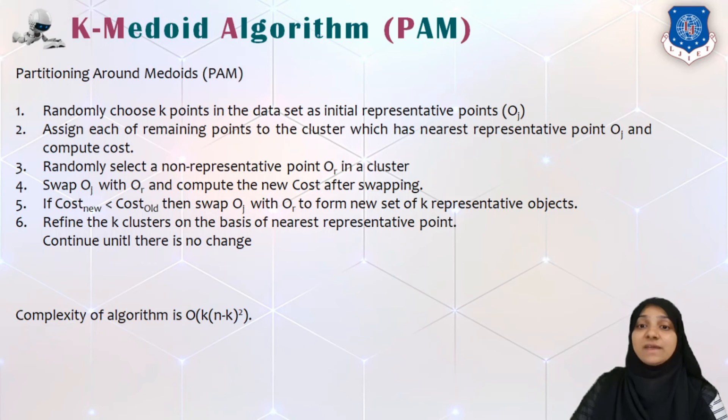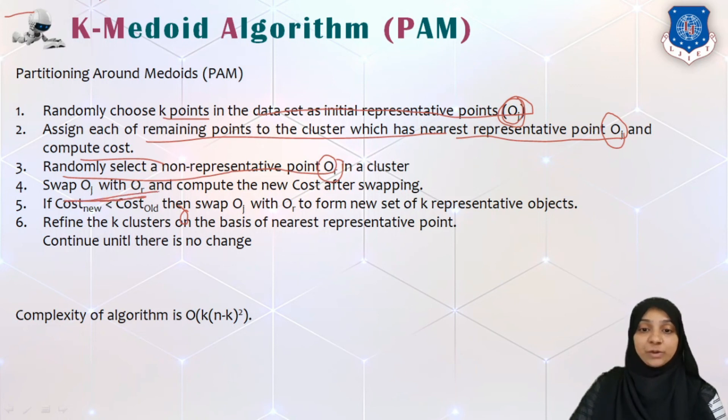Let us quickly summarize the PAM algorithm. PAM stands for partitioning around medoids, which is equivalent to K-medoids algorithm. So we are randomly choosing K points in the data set as initial representative points, and we call them as O_j. So O_j is nothing but for each particular cluster, O_j is our data point which represents a medoid itself. We will assign the remaining data points to the cluster with its nearest representative O_j. That means we are assigning it to the nearest medoid and we can compute its cost. Now randomly select any non-representative point O_r in a cluster, and we can swap or we can consider initially that O_r with O_j. So we are first changing the medoid and we will calculate its new cost.